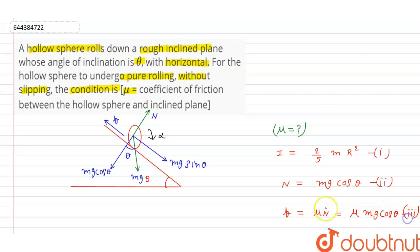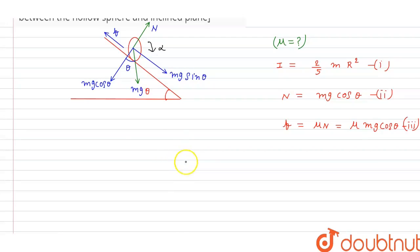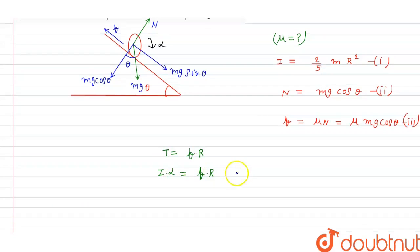Taking this equation as third equation. Torque about center of mass sphere is equal to T equal to F into R, where R is the radius of sphere and F is frictional force. And we know that torque is equal to I into alpha, where alpha is the angular acceleration and I is the moment of inertia of the sphere. F into R. Taking this equation as fourth equation.